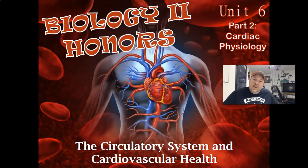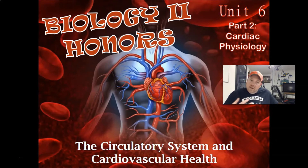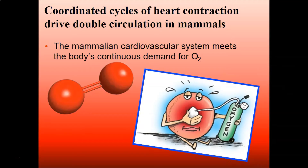Today we're going to talk about the physiology and anatomy of the circulatory system. Remember we said we actually have a double circuit — a pulmonary and a systemic circuit. That's very important because it's all controlled by your nervous system for the most part, and the mammalian cardiovascular system meets the body's continuous demand for oxygen.